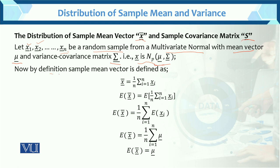By definition, the sample mean vector is defined as: the sample mean equals the sum of x over n, so the sample mean vector is 1/n times the sum for i varying from 1 to n of xᵢ vector. Now taking expectation on both sides.